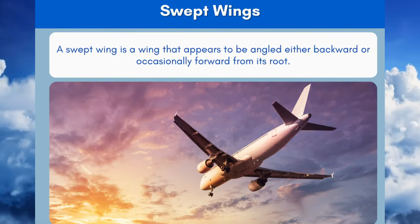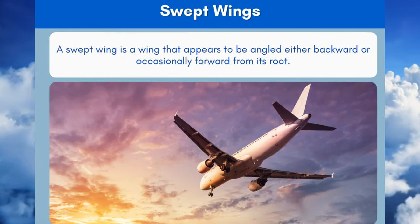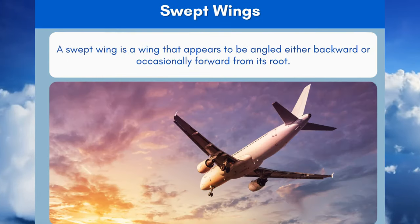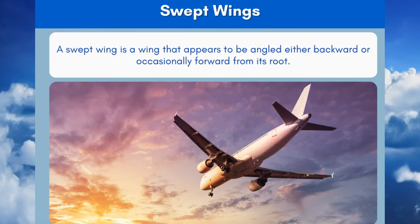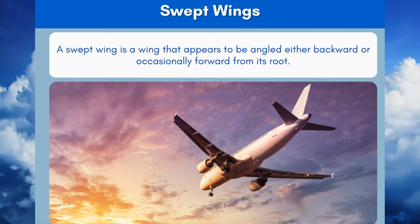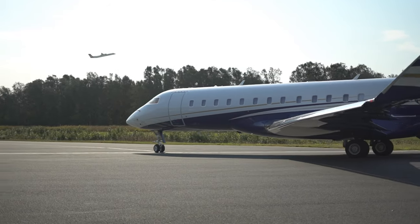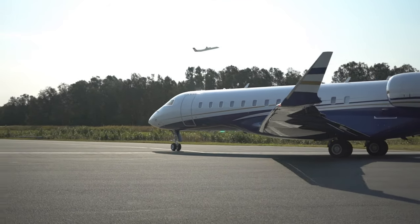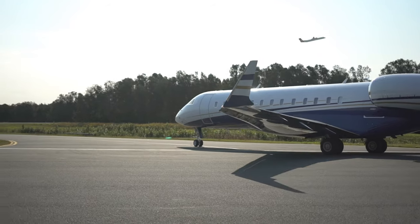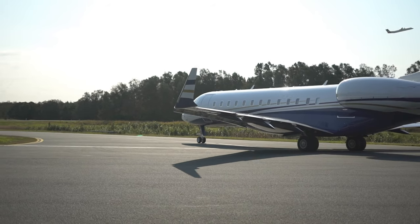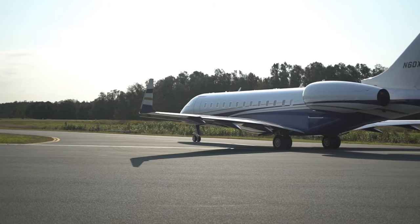8. Swept Back Wings. Swept back wings are wings that appear to be angled backward — or occasionally forward — from their root. Rather than protruding sideways in a straight line, the wings angle back for a more aerodynamic profile.